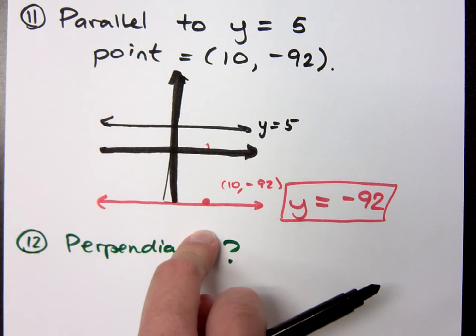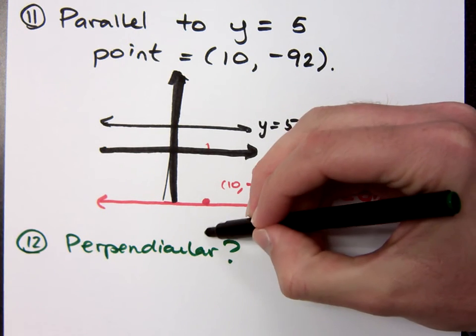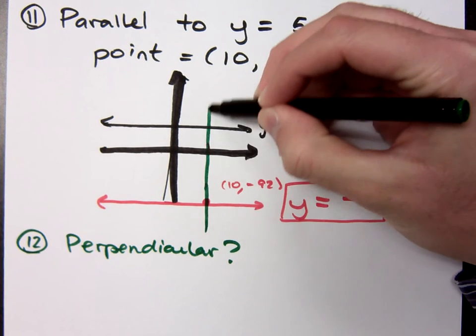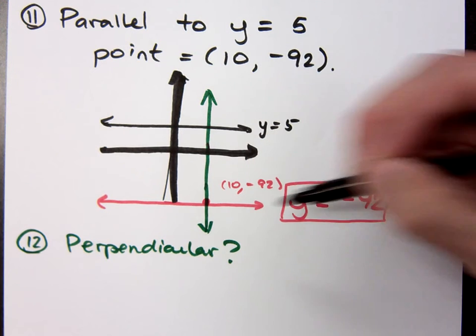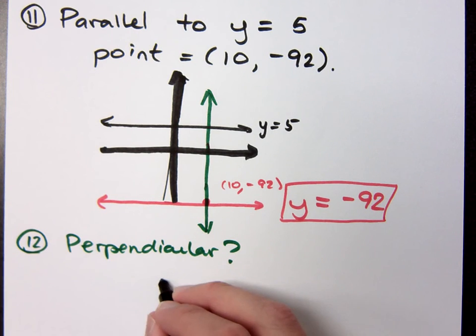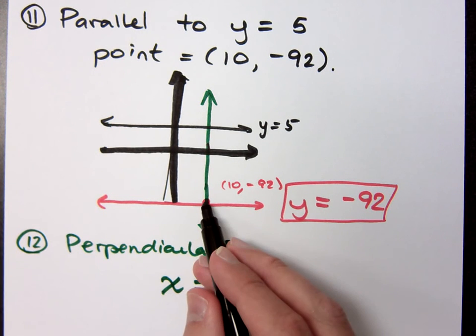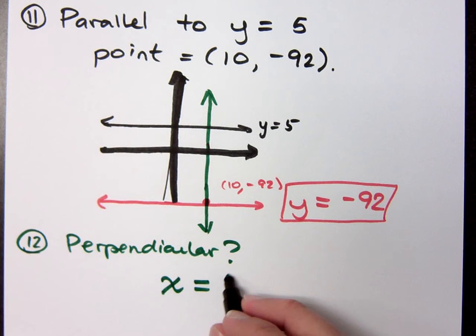You're going to be a vertical line, right? So, if I need to be a vertical line that goes through this point, what's the equation for that guy? What's the equation for any vertical line? X equals a number. In this case, X equals what? You've got to go through this particular point. 10. And that X value is 10.